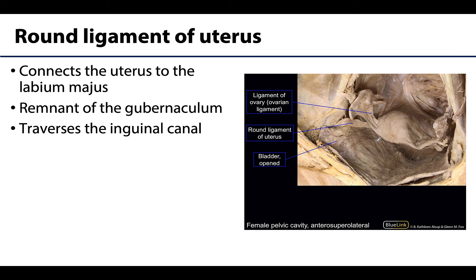The round ligament of the uterus was discussed in a previous session on the inguinal canal. It extends from the lateral uterus, through the deep inguinal ring, traverses the inguinal canal, and ends in the labium majus, although some studies show a high prevalence of the structure ending just distal to the superficial ring. The portion nearer to the uterus contains a notable amount of smooth muscle, which gradually diminishes more distally, appearing more fibrous or like a collection of adipose tissue the more distal you get.